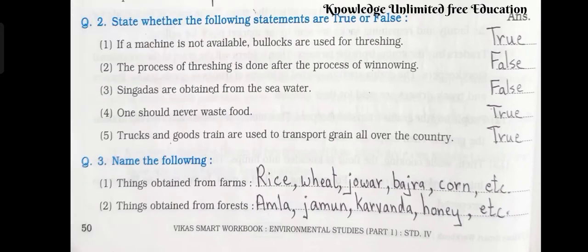Question number 2. State whether the following statements are true or false. Number 1: If a machine is not available, bullocks are used for threshing. Answer: true. Number 2: The process of threshing is done after the process of winnowing. Answer: false.